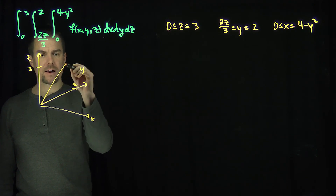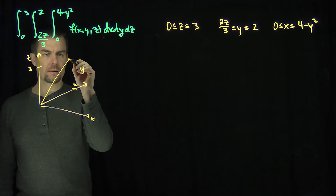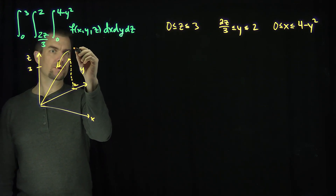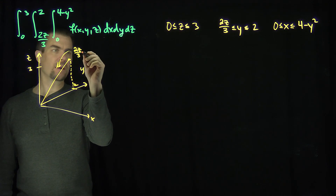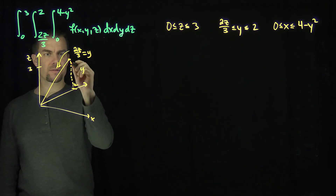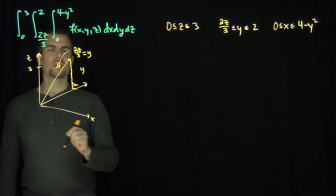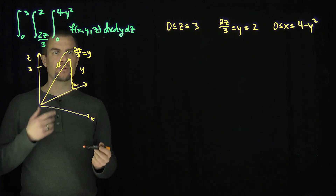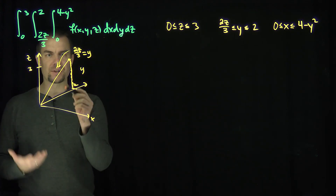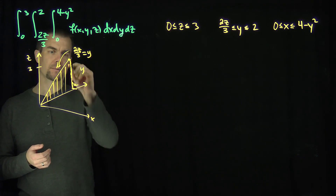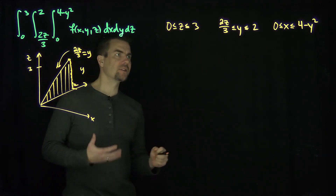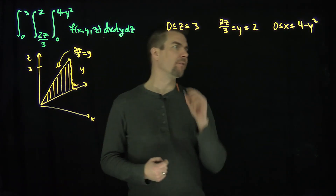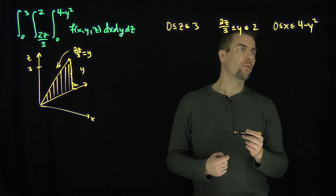We have this line where 2z/3 equals y, which corresponds to the value y equals 2. When z equals 3, y equals 2, and when z equals 0, y equals 0. x starts at 0 in this triangular plane, and it goes up to the graph x equals 4 minus y squared.